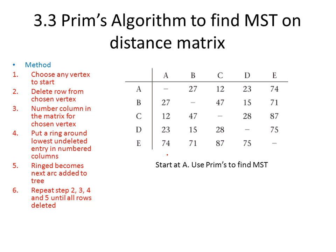Prim's algorithm to find the minimum spanning tree on a distance matrix. A distance matrix is just a network which has been put into a table. In this question we've been given a table and they're asking us to start at A. So we put a 1 above A, which means we're at A.